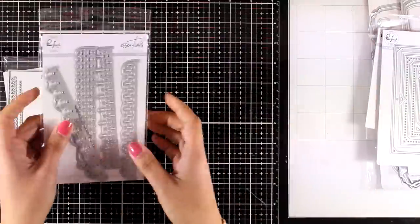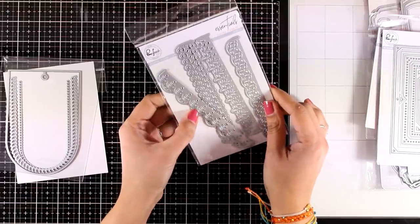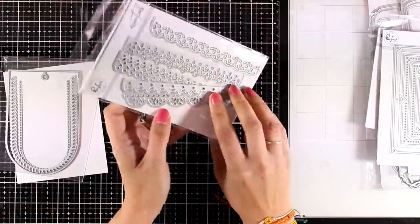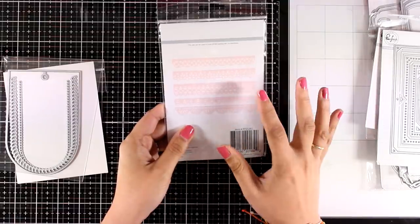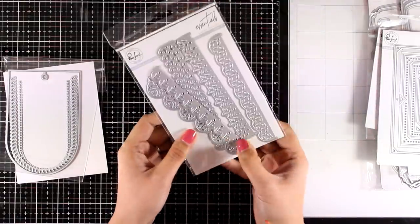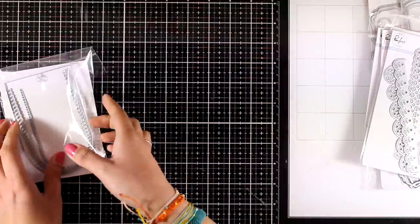Let's move on to the Lacy Edgers. This is packed with borders - there are five dies included. If you don't have any border dies like this one, then this is a great stash because you get so many different variations.